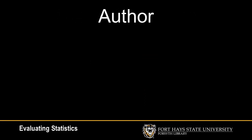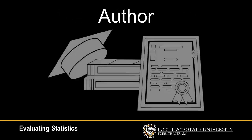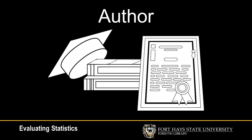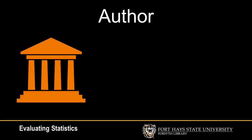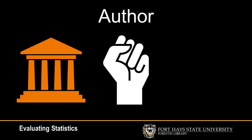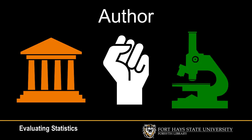One of the first things you should look at is the credentials of the creator. As mentioned in the previous tutorial, getting started with statistics, there are generally three types of organizations that create statistics: government agencies, advocacy groups, and university researchers.